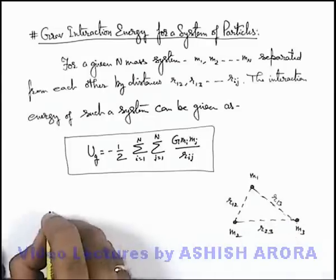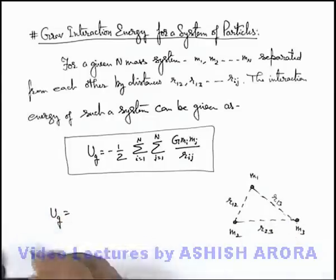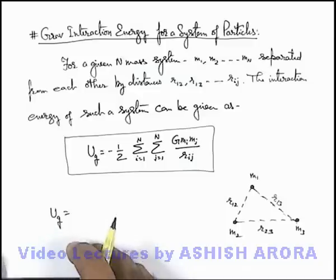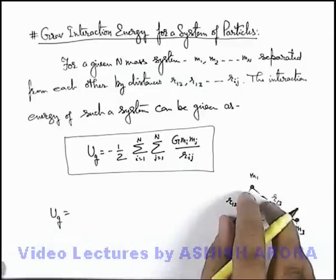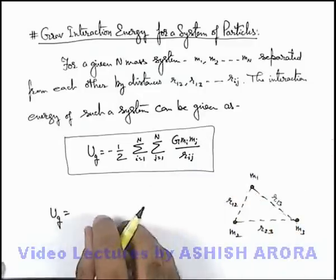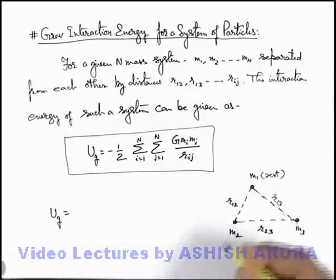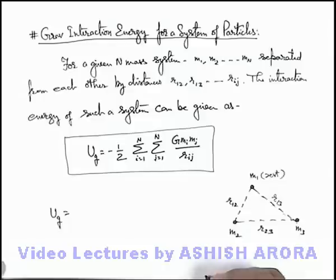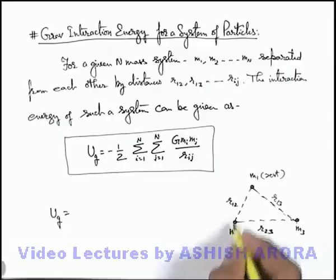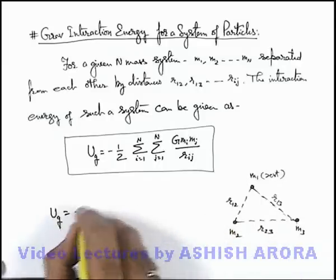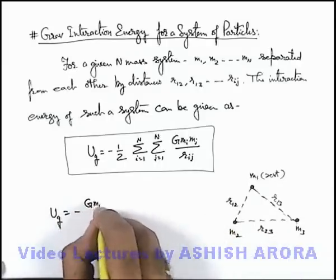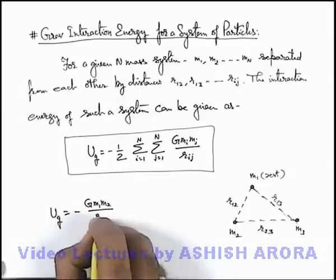If we wish to find out the gravitational potential energy for this system, as per definition we have studied that gravitational potential energy is work done in assembling these particles from infinity to this position. So let's consider m1 was earlier at rest and m2 is brought from infinity to this point. We know well that the work done against the gravitational forces of m1 and m2 can be written as minus G m1 m2 by r12.